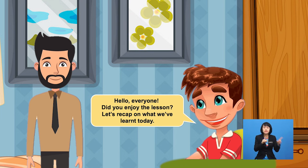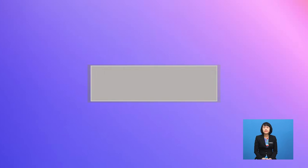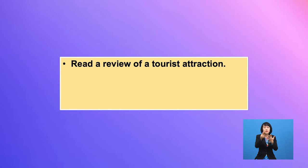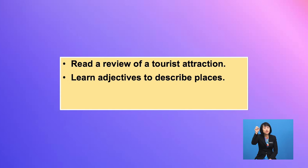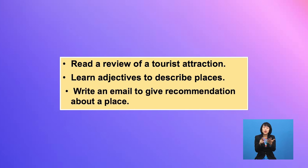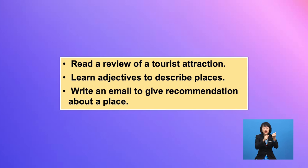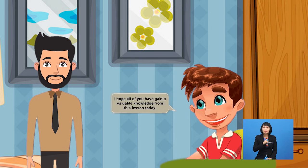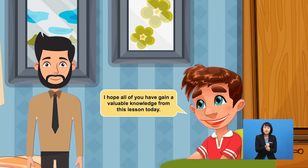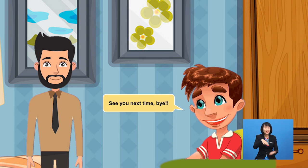Hello everyone! Did you enjoy the lesson? Let's recap on what we've learned today. In the beginning, we read a sample review of the Sherlock Holmes Museum, written by my friend Sarah. From the review, we learned how to give details about the place and mention what we like or dislike about it. After that, Uncle Shafiq taught us some adjectives to describe places. He also helped us to write a review about the Lost World of Tambun in a structured way. I hope all of you have gained valuable knowledge from this lesson today. See you next time. Bye!